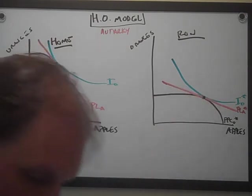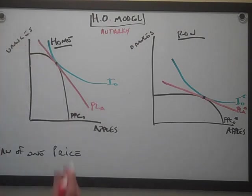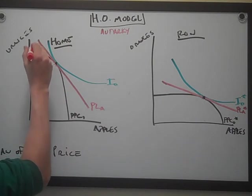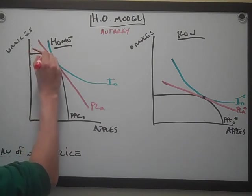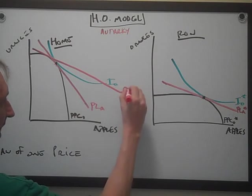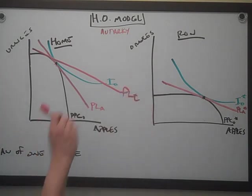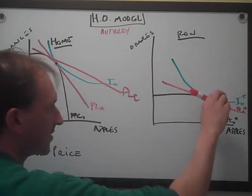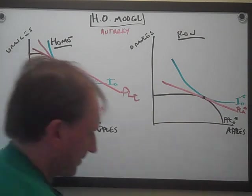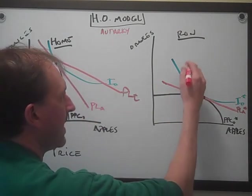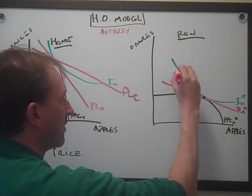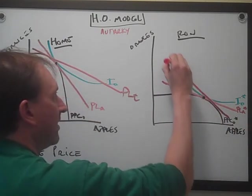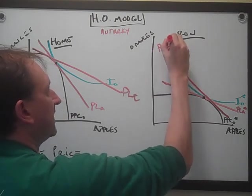The way you do that — and there's no good way to explain this other than to say that the line rolls across the top of the production possibility curve. I'm going to put a new price line like that and call it PLT — that's PLT in trade. Then I'm going to make a similar line with a similar slope here. This one rolls down the production possibility curve, and that's going to be PLT star.